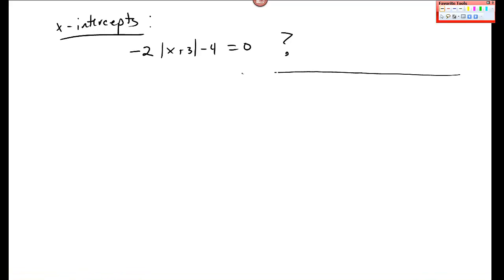So I'm talking about how to solve these absolute value equations. And I want to go back to a simpler problem. Then we'll come back to this one, this negative 2 absolute value of x plus 3 minus 4 is equal to 0.